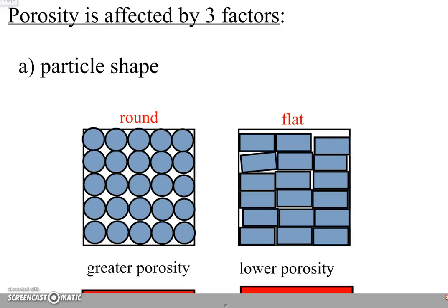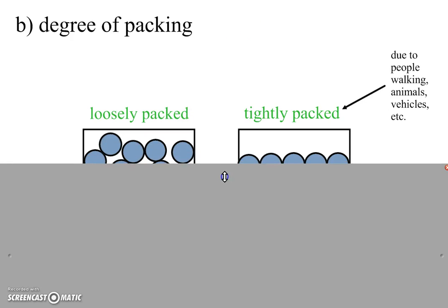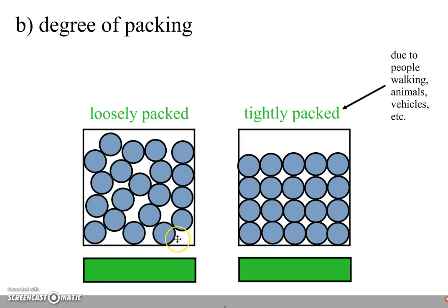The second factor that affects porosity is the degree of packing. In other words, how tightly packed are those particles? There's all different degrees of packing. In some soil, the grains are loosely packed, like in this image. In other soils, the grains are more tightly packed, such as these ones over here. Tightly packed soil could be a result of many different things. It could be due to people walking on the soil. Every time you walk on dirt, you are packing down those grains.